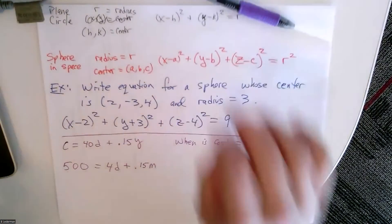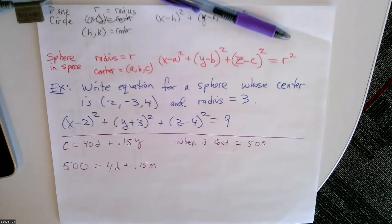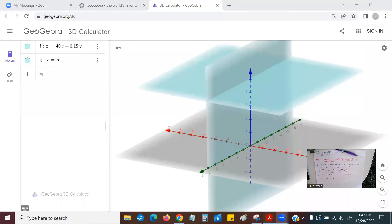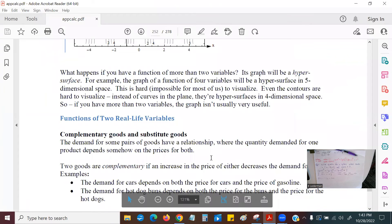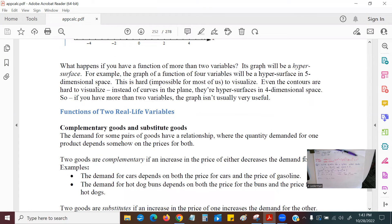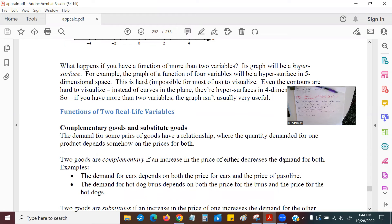Now I want to talk about an interesting concept from economics called complementary goods versus substitute goods. Complementary goods means that an increase in the price of either one will decrease the demand for both. For example, consider cars: the demand for cars depends on the price of cars, but it also depends on the price of gas. If gas is very expensive, people might think twice before buying a car.